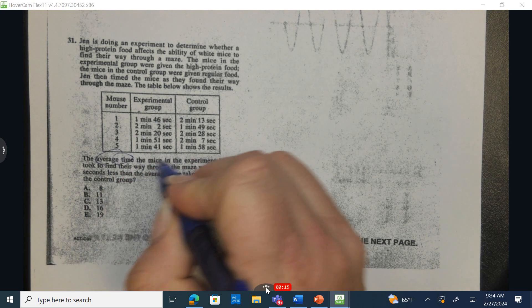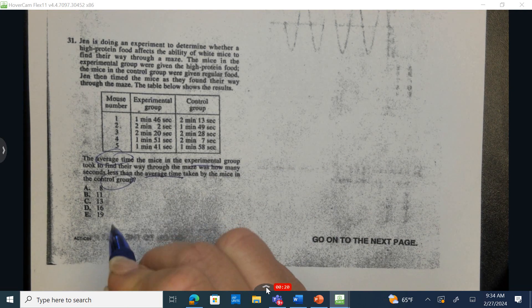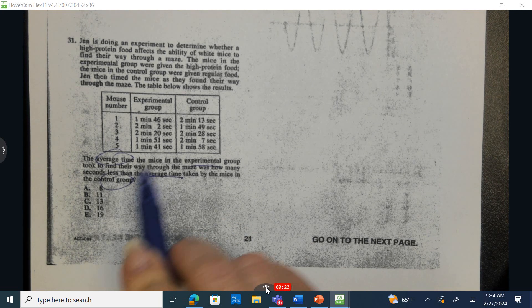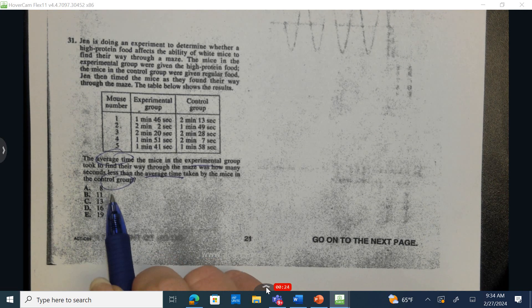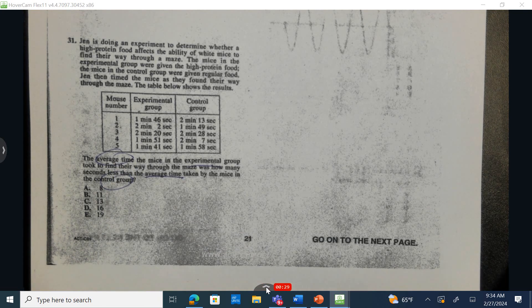We want to find the average time of the experimental group and the average time of the control group. It says the control group is greater than the experimental group. How do I know that? It's because it asked us how much less time is the average for the experimental group.